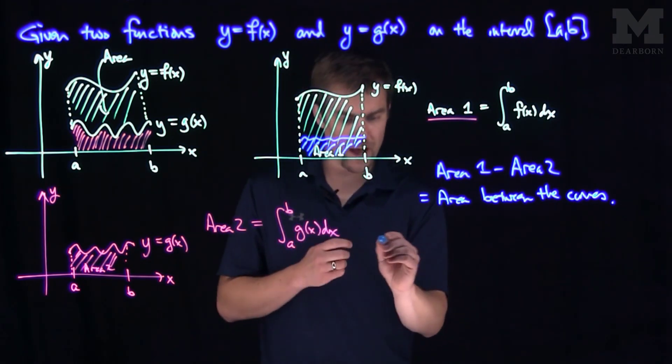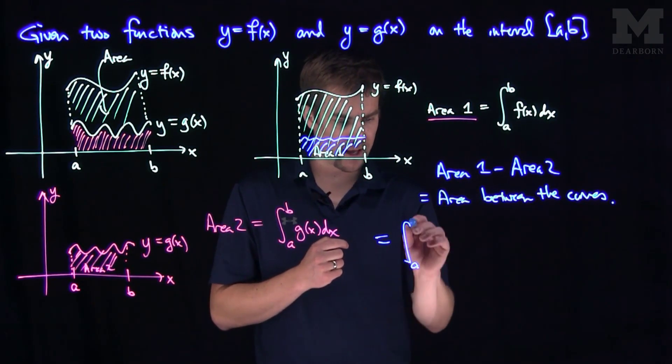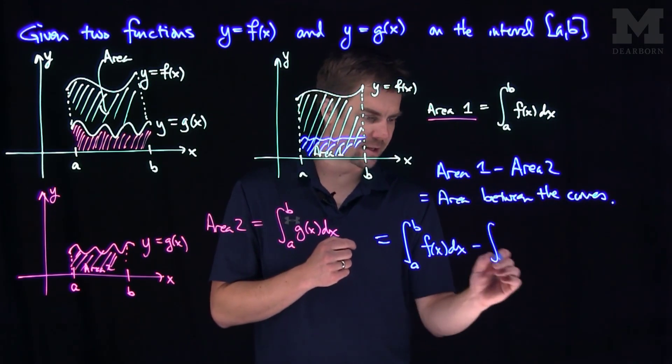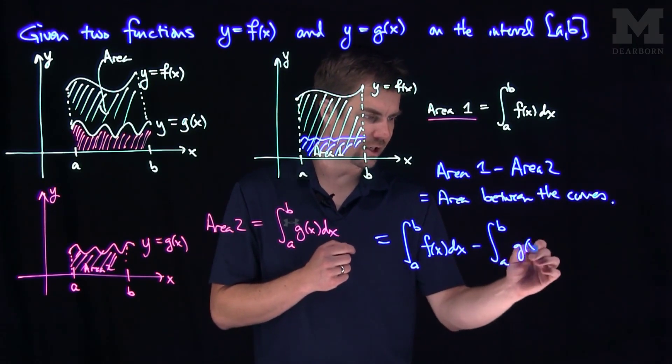And so if we write this down, what we'll have over here is this is going to be the integral from a to b of f of x dx minus the integral from a to b of g of x dx.